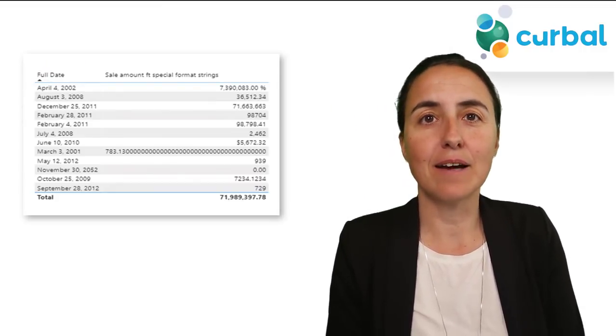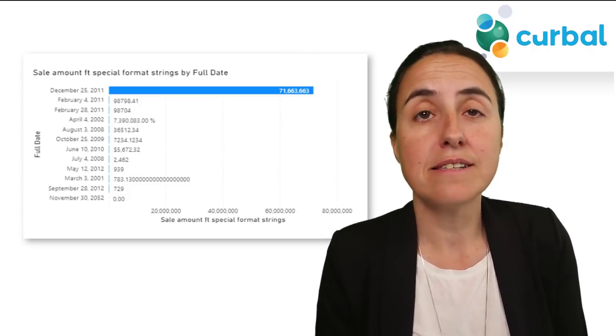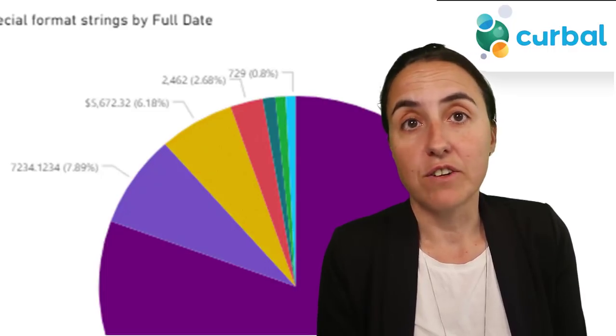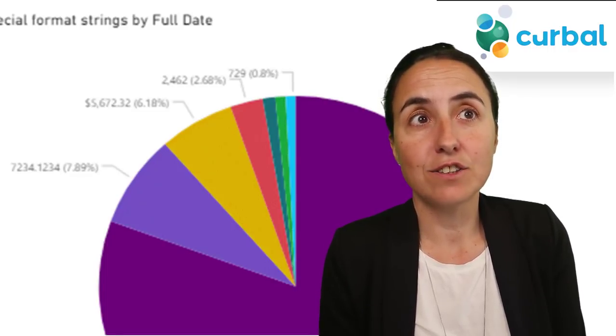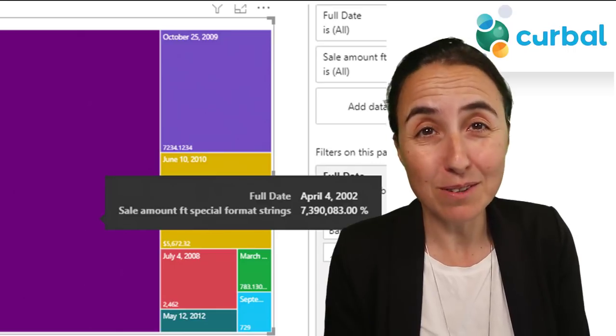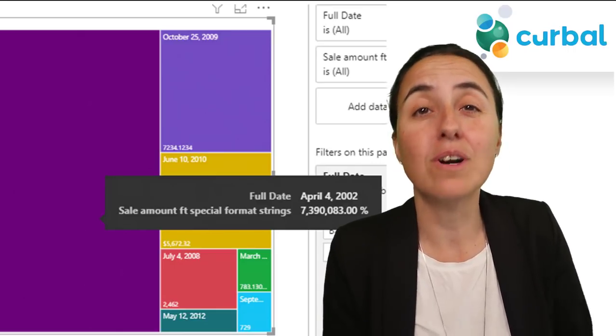The next one is dynamic formatting, which means you can have different currencies on the same visualization — for example in a matrix. That is good news, but it is only Premium. The reason is that it requires calculation groups, which are Premium-only, so we're out of luck on that one.